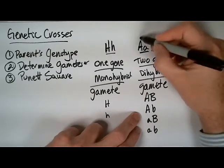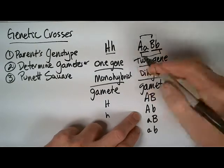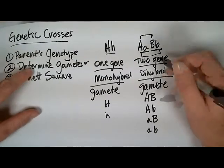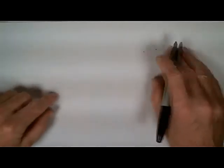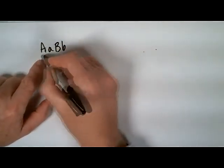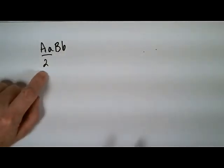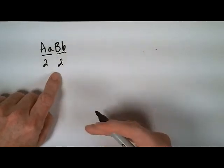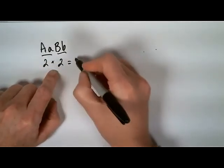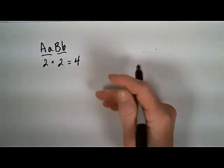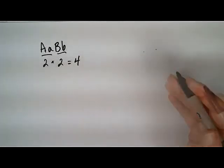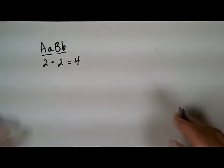It almost looks like the FOIL method for math. Now here's a trick to help you make sure you get the right thing. Take that same big A, little a, big B, little b. For the A gene there are two possibilities, and for the B gene there are also two possibilities. Two times two equals four. When we figured out those gametes just a moment ago, we had one, two, three, four. This is a way to check yourself to be sure you're getting the right number of possible gametes or combinations.